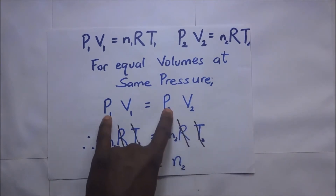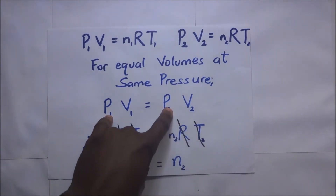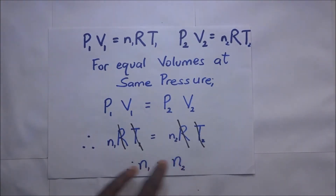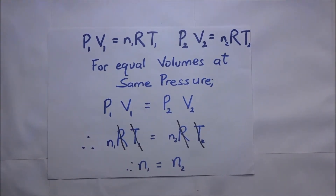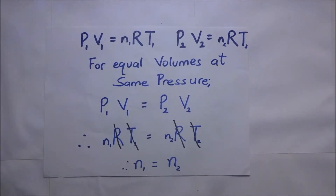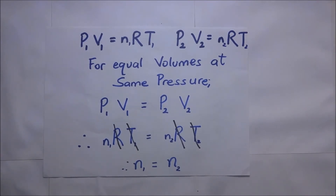This proves Avogadro's law: equal volumes of two gases which are at the same temperature and pressure will contain the same number of molecules. That is how we have been able to show Avogadro's law. Now we are going to show this law using the expression of kinetic pressure.